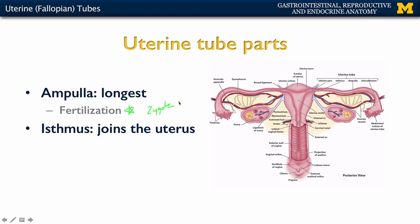This continues into what's referred to as the isthmus, the narrowest portion of the uterine tube. This is where there is joining to the uterus and the uterine cavity, where implantation typically occurs. Occasionally, fertilization can actually occur in the peritoneal cavity as well, though the ampulla is the most typical site.